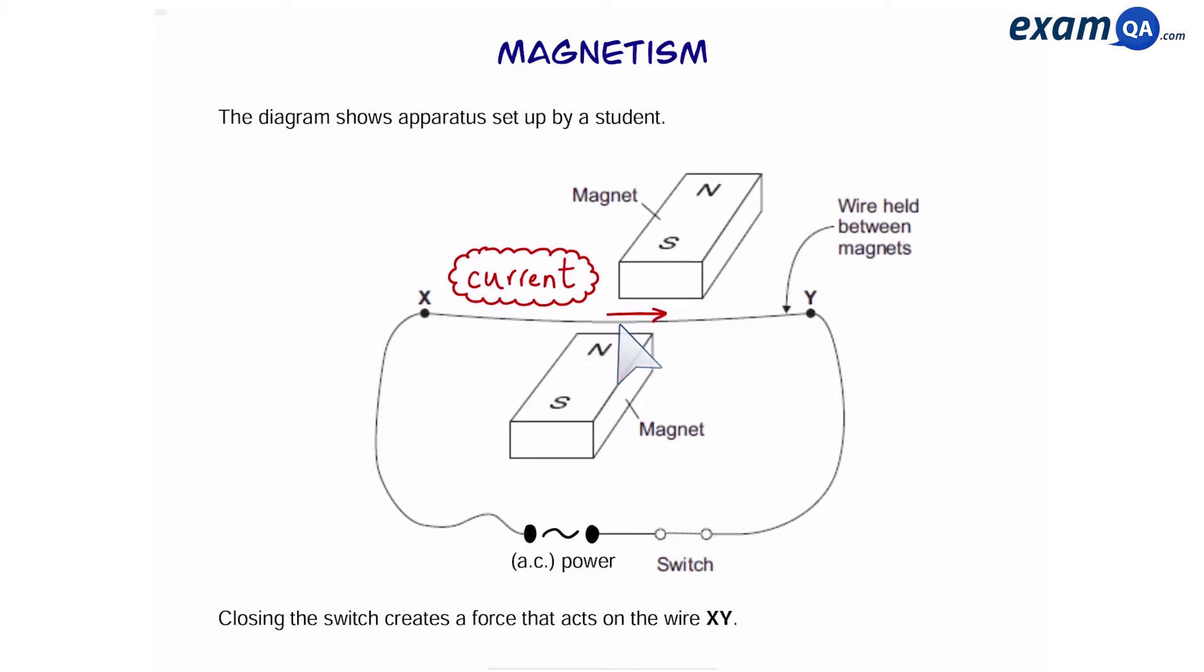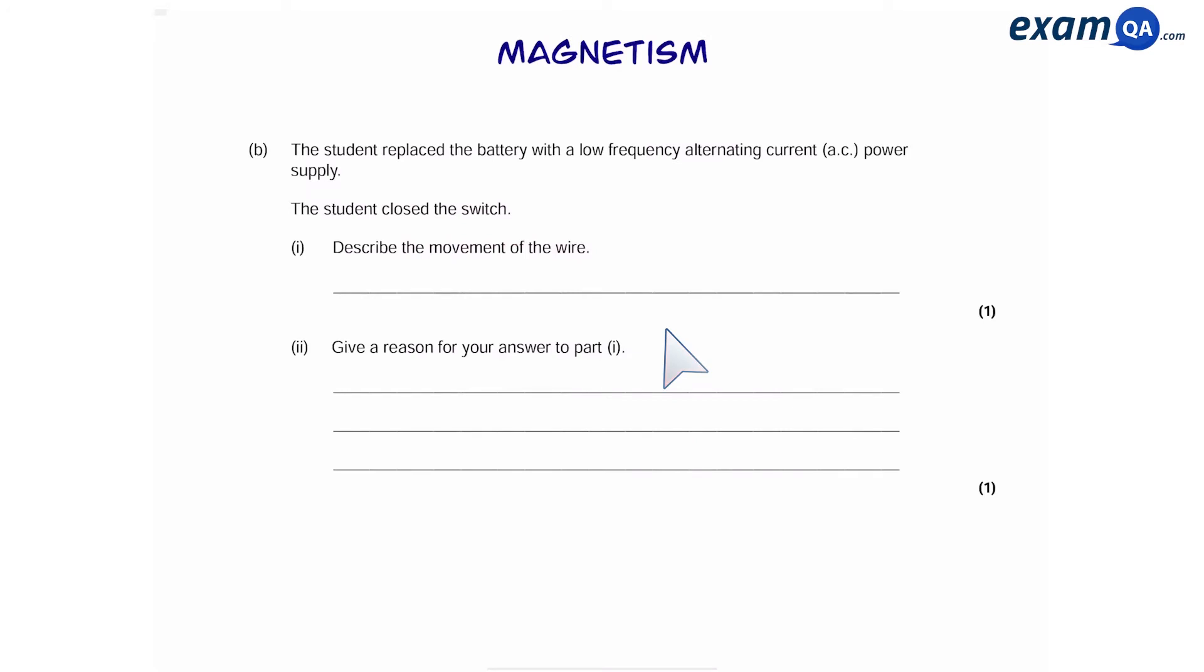For example, right now it's pointing towards the right. However, now it's towards the left and back towards the right. So what effect will this have on our wire? Well, let's say if it's pointing towards the right like before, we said that the force is going to point upwards, so the wire will move up. However, if the current now decides to point in this direction, that means that the wire will move downwards. And up and down. So to describe the movement of the wire, we're going to say that the wire will move up and down. And to give a reason, the force is continually changing direction.